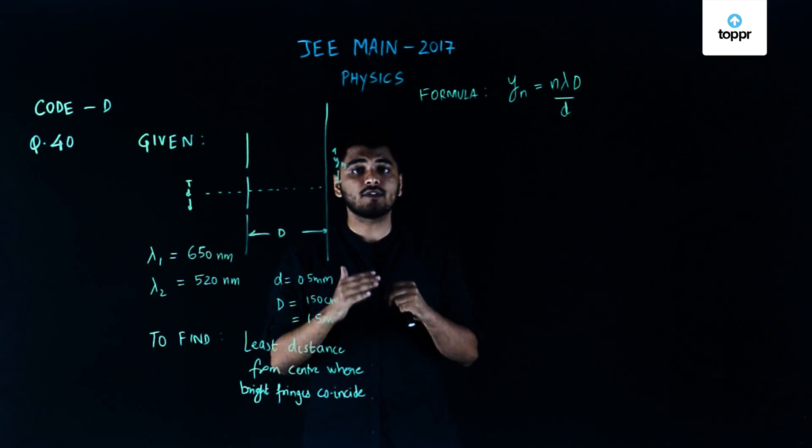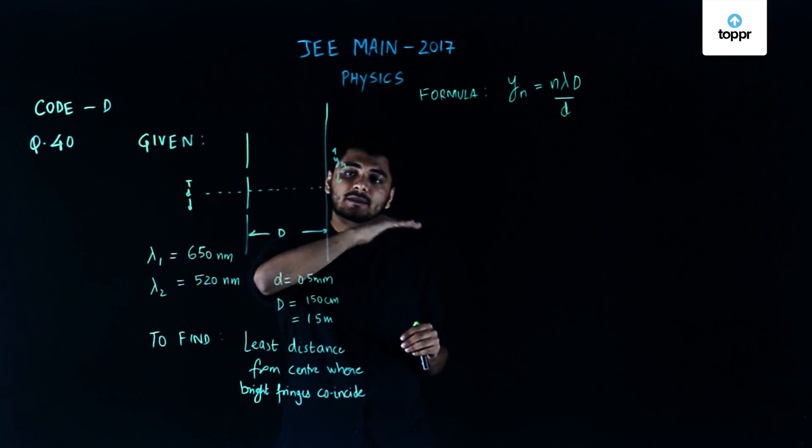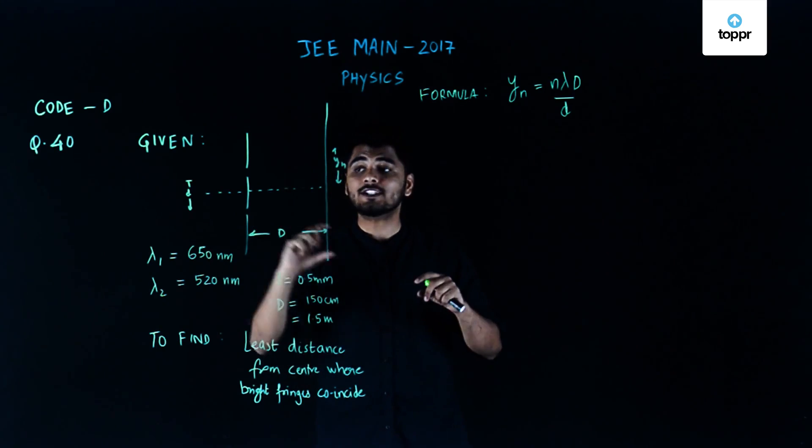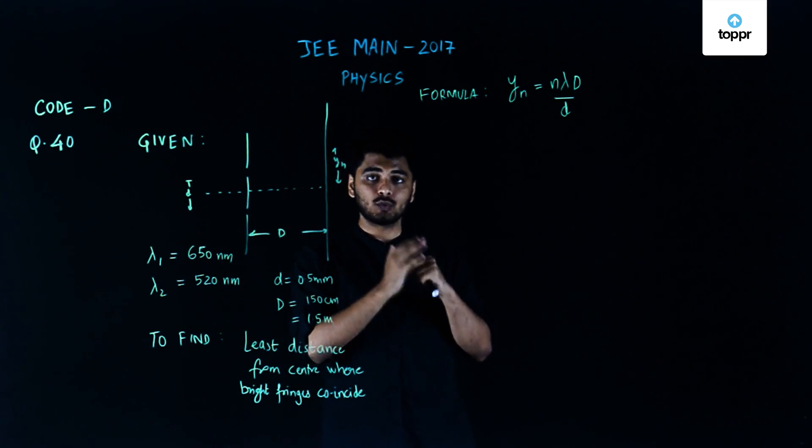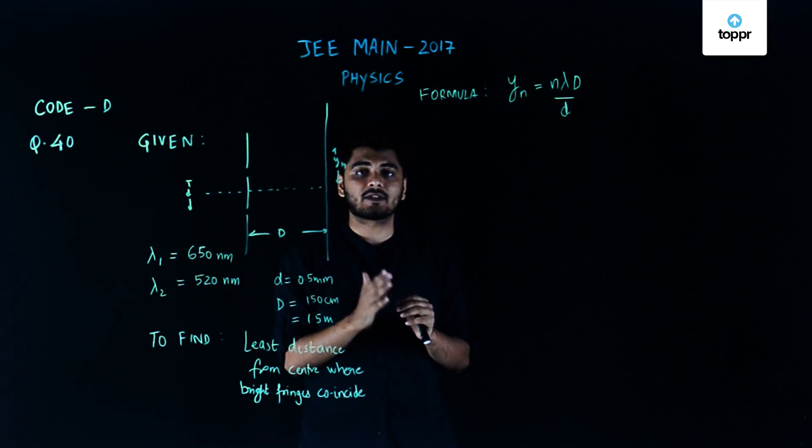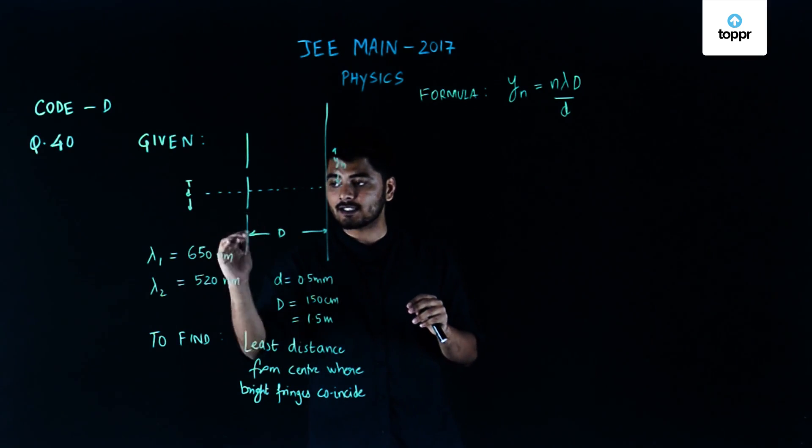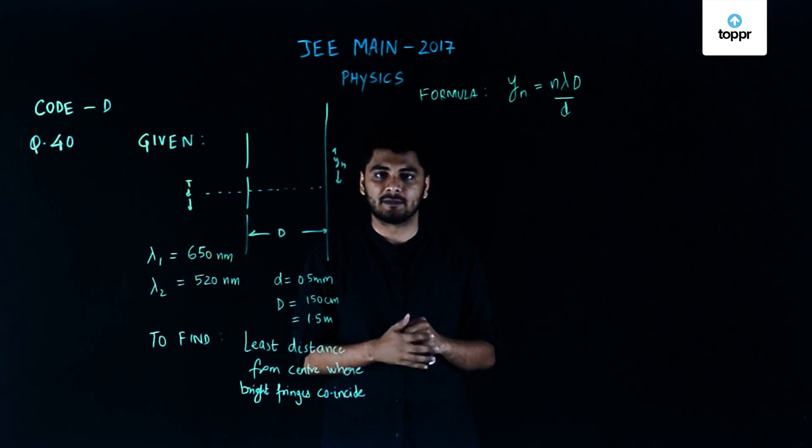Using this we need to find out the least distance from the central maximum where these two will produce a common bright fringe. In order to do that, let's find out the position at which these two will produce a common maxima.